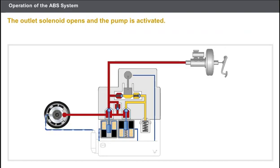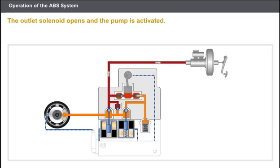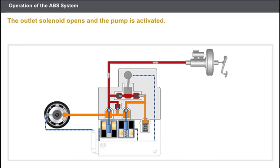Now let's look at the pressure reduction phase. If the wheel starts to lock, the computer reduces the pressure for the wheel concerned. The inlet solenoid remains closed. The outlet solenoid opens and the pump is activated. The drop in pressure is instantaneous, thanks to the low pressure accumulator. The pump action allows the fluid stored inside the accumulator to flow back to the master cylinder outlet circuit, thus preventing the pedal from being depressed. The backflow causes the pulses felt on the pedal.